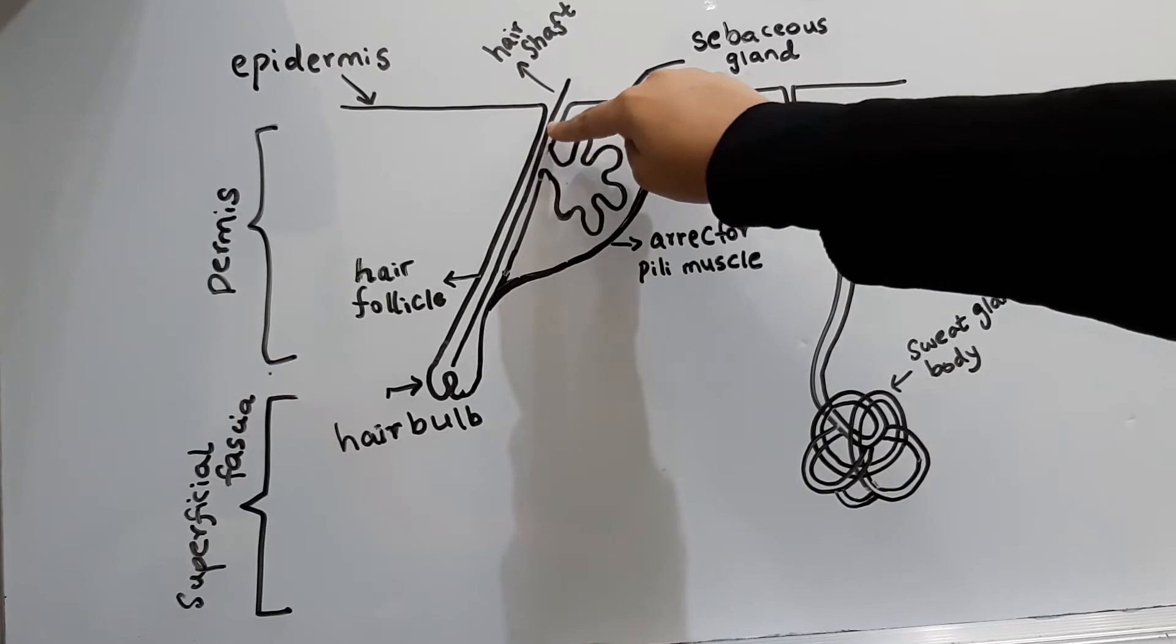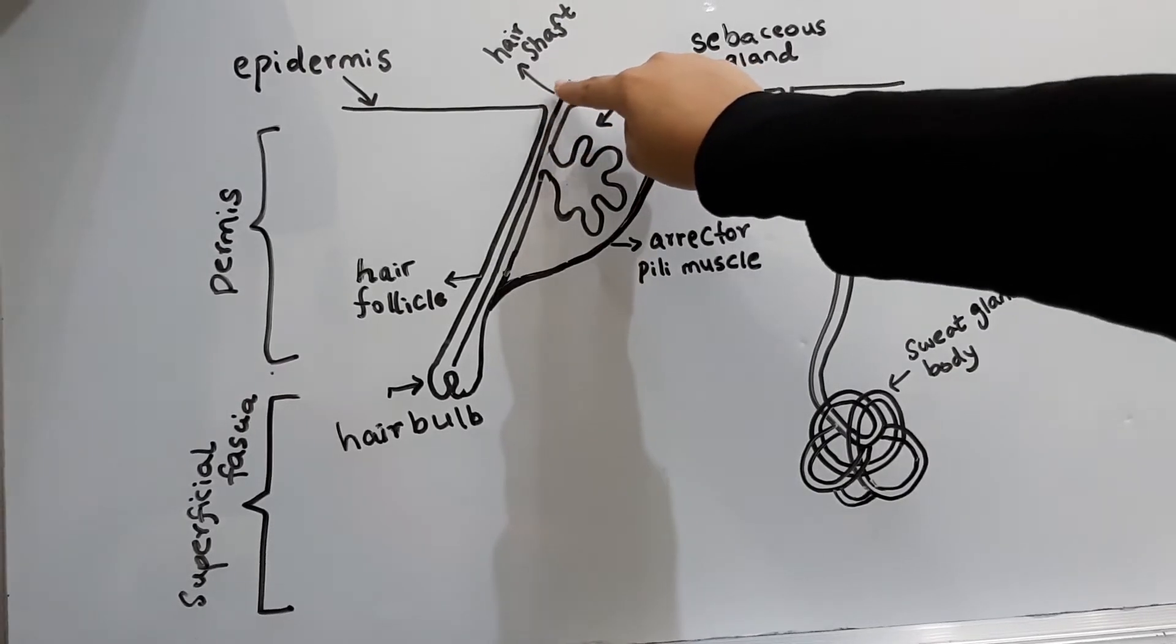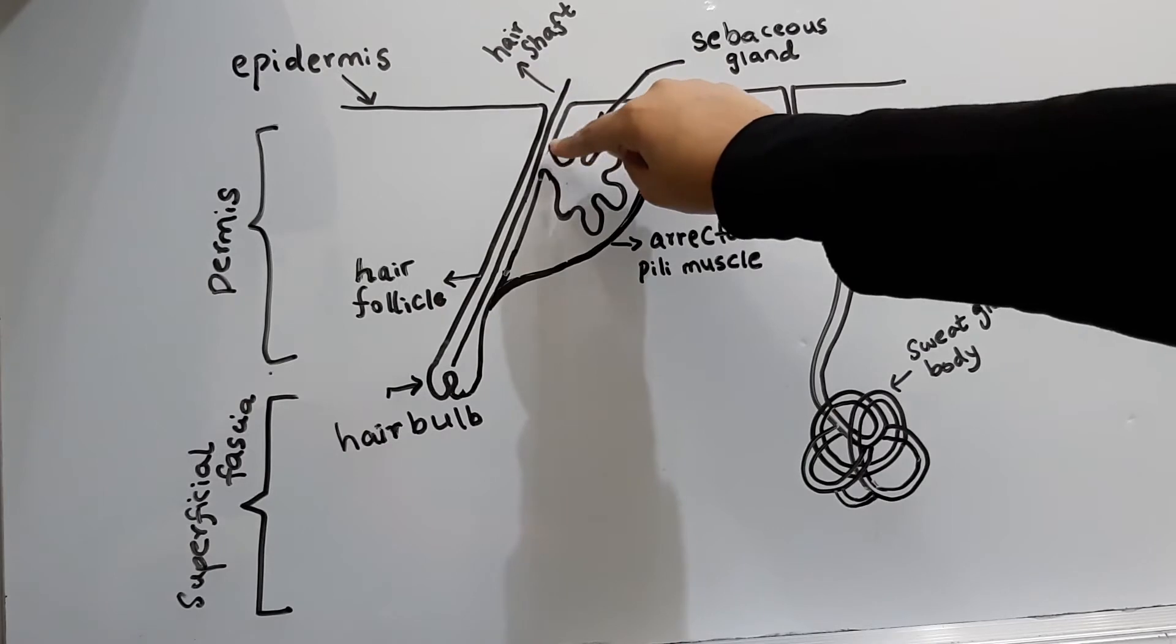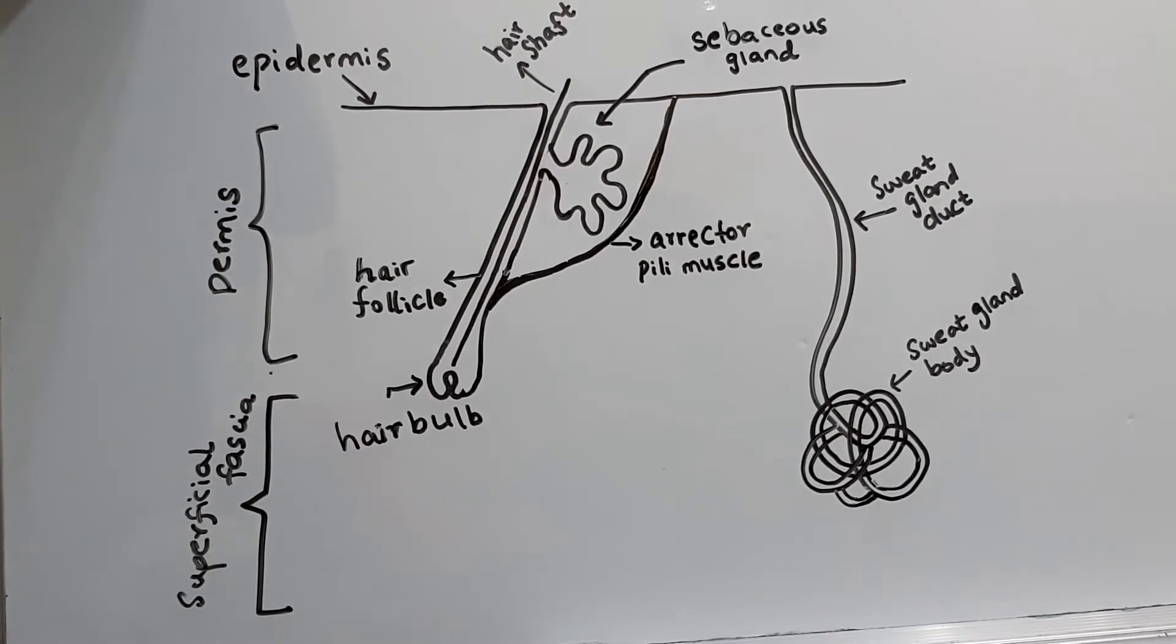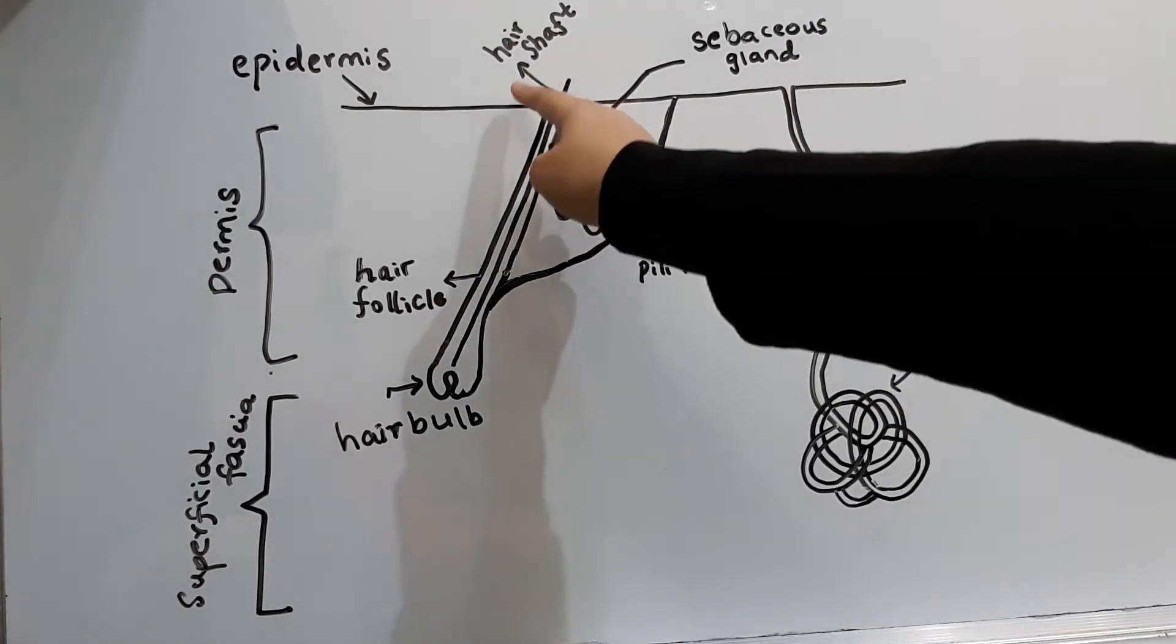The purpose of this secretion from the sebaceous gland, that is the sebum, is to preserve the flexibility of the hair. And along with that, it also oils the surface epidermis around the mouth of the follicle.